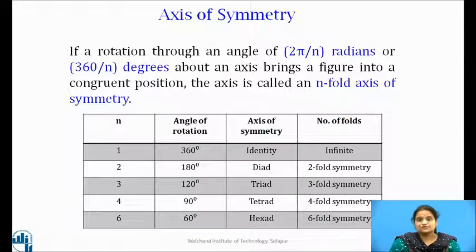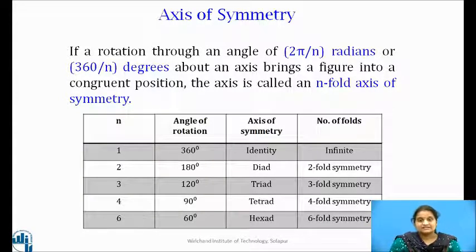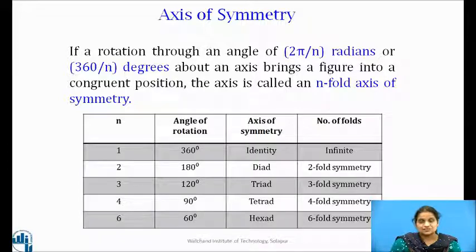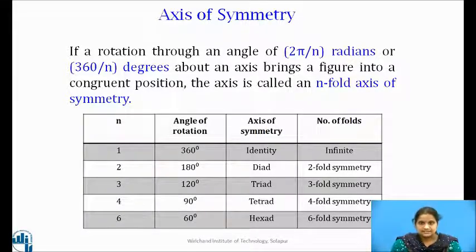For n = 2, the crystal has to be rotated through 180 degrees to achieve self-coincidence and the axis is known as the diad axis. If n = 3, the axis is called the triad axis and the crystal has to be rotated through 120 degrees. For n = 4, the angle of rotation is 90 degrees and the axis is termed the tetrad axis. If n = 6, the corresponding angle of rotation is 60 degrees and the axis is called the hexad axis.